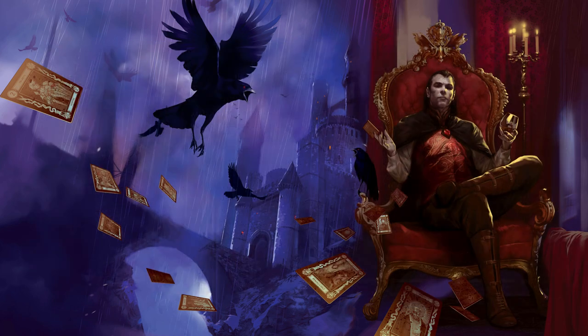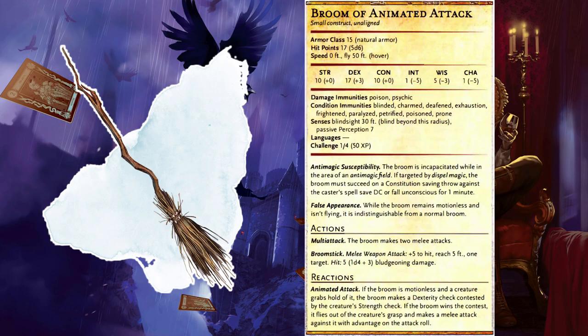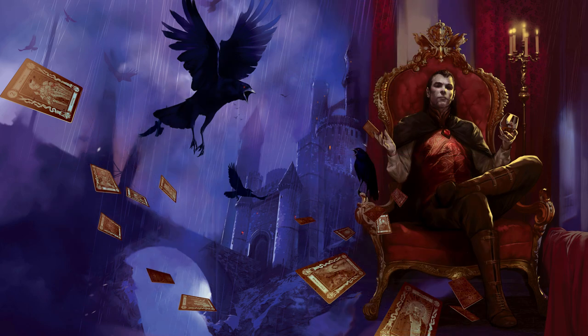A Broom of Animated Attack: You hear a scratching noise. Out of the shadow comes a broom, sweeping its way towards you as though held by invisible hands. When it gets within 5 feet of a party member, the broom attacks.